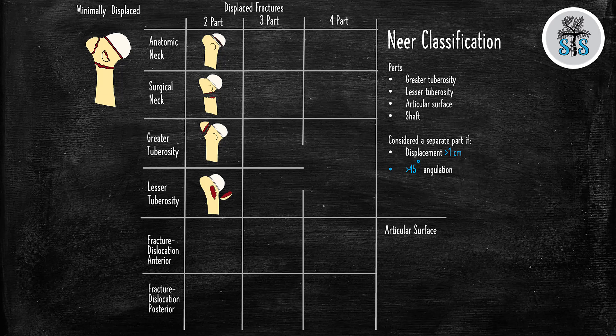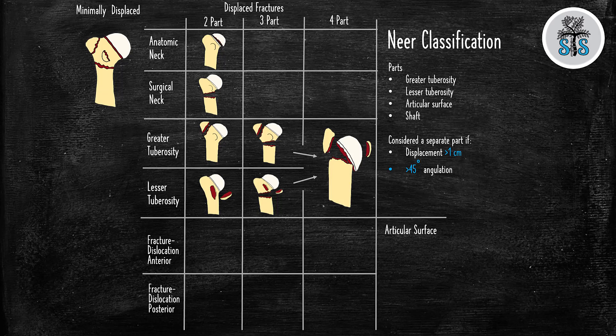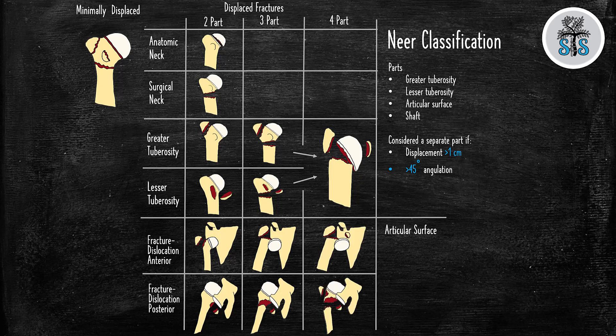But what happens when there's more than one fracture line? That's when we get into the three-part fractures. So you can have a fracture line through the greater tuberosity, then through the neck, or through the lesser tuberosity and the neck. And then if you add another line, you get four-part fractures. And these are pretty much blown up.